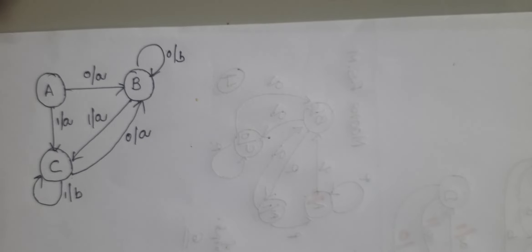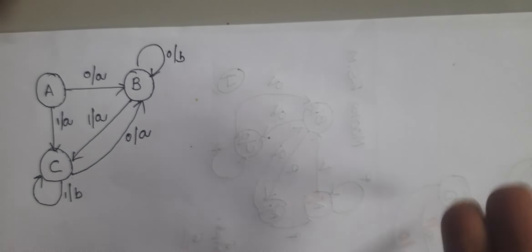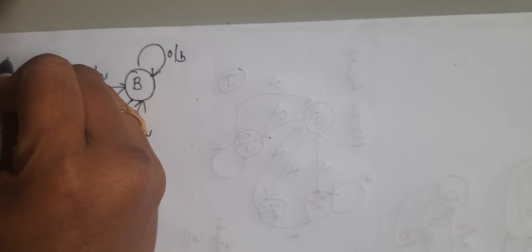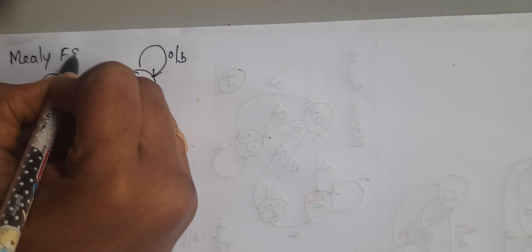By seeing this diagram, we can easily identify that this is a Mealy FSM. Both inputs and outputs are presented on the transition line. So this is a Mealy FSM.